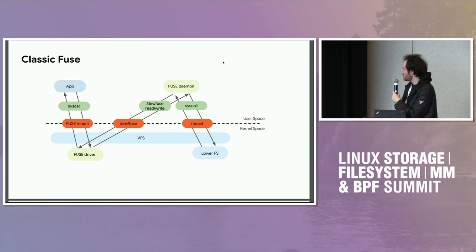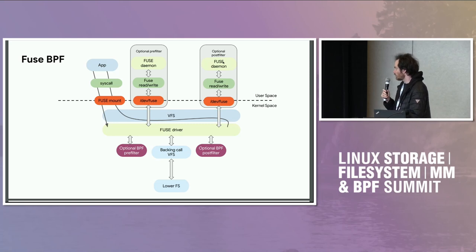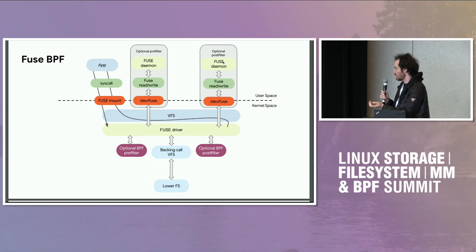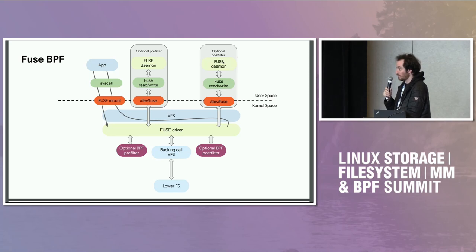Within Fuse BPF, we try to stay inside of the kernel as much as possible. This is our general flow: you have a call come in, you optionally filter some of the inputs to whatever command you're running — for instance, if you're doing a lookup, maybe on the lower file system you have some differently named file you want to look up. And we have an optional callout to do the same from user space if what you're doing can't be done in BPF, say you're reading from a database somewhere.